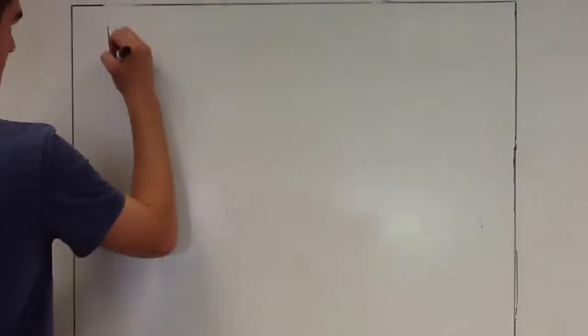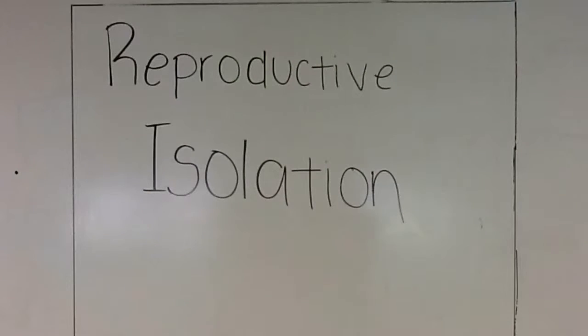Now that we've covered that, let's get back to speciation and reproductive isolation. So what is reproductive isolation? Reproductive isolation is the inability to reproduce with other groups or populations. Reproductive isolation can be caused by specific reproductive barriers.